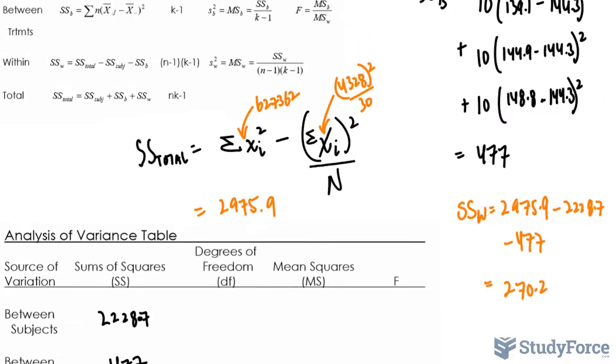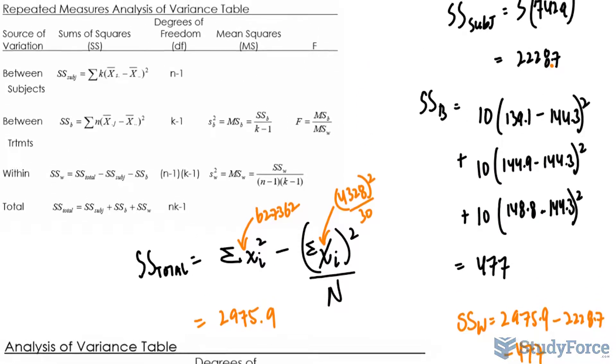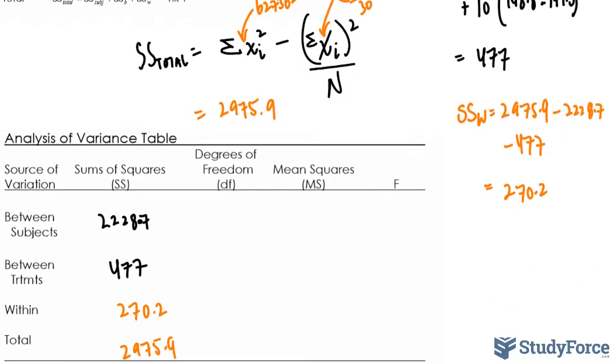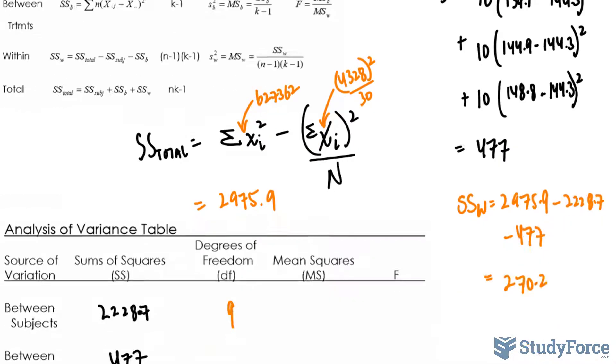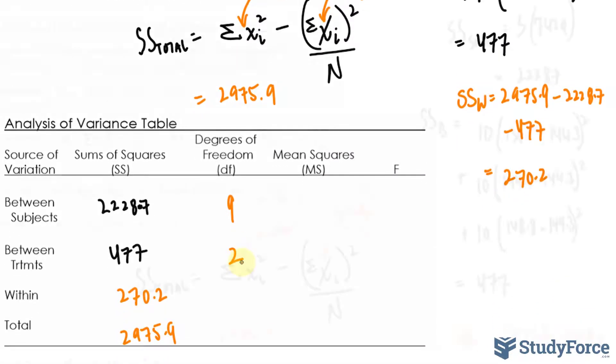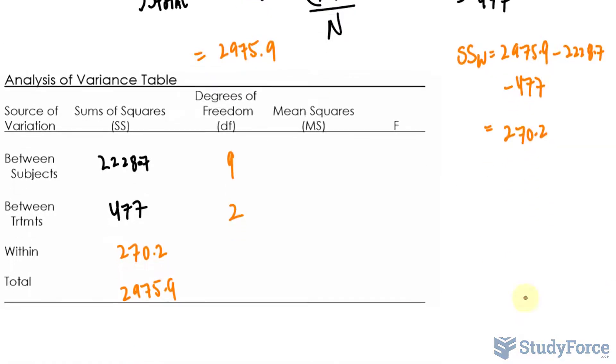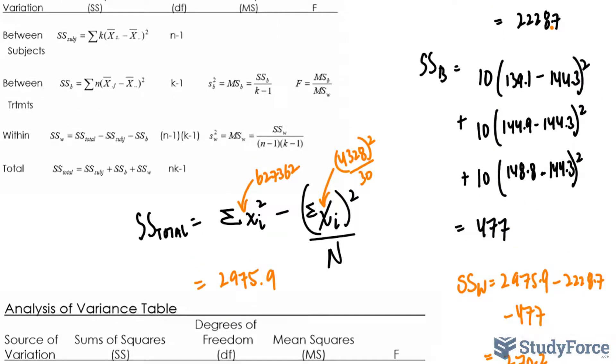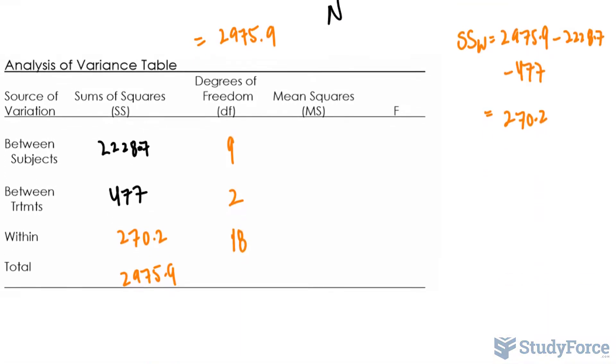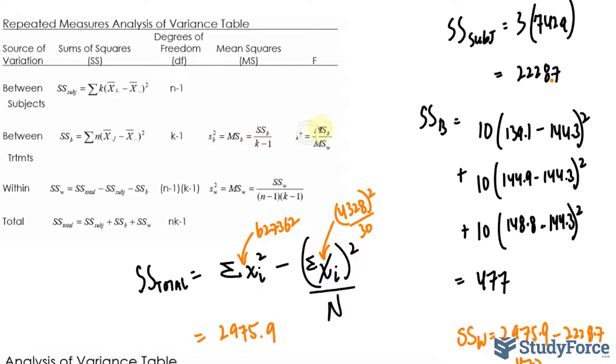OK. The degrees of freedom column. This part gets easy. N minus 1, that's 9, because 10 minus 1 is 9. K minus 1, that's 2. For within, N minus 1 times K minus 1, that's 18. And for total, it's NK minus 1. 3 times 10 is 30, minus 1 is 29.